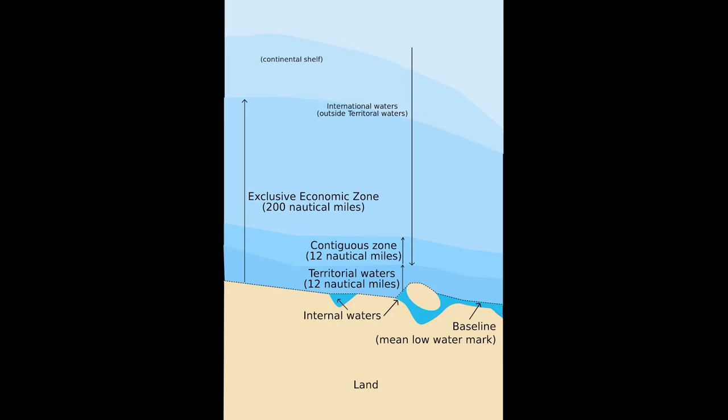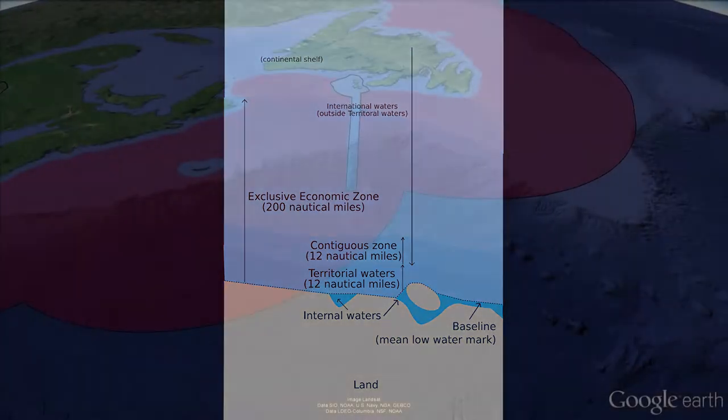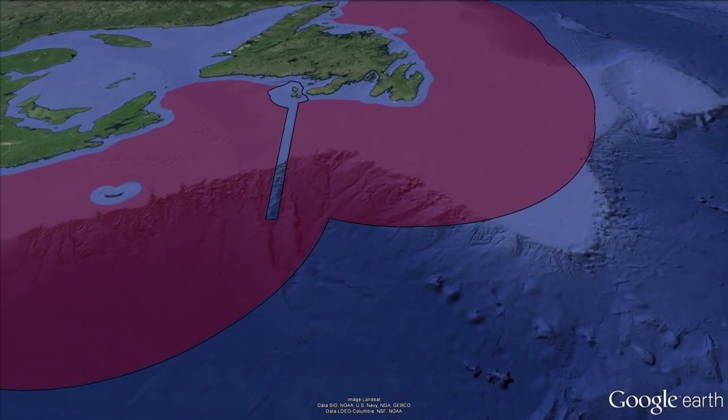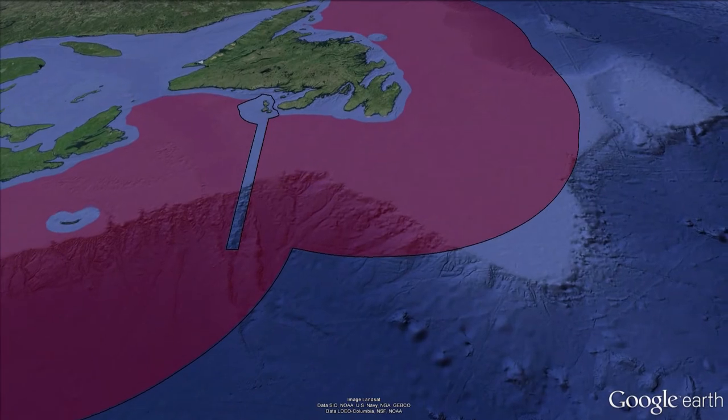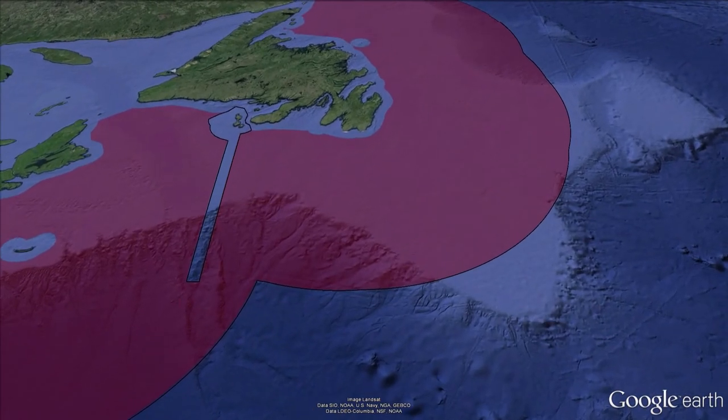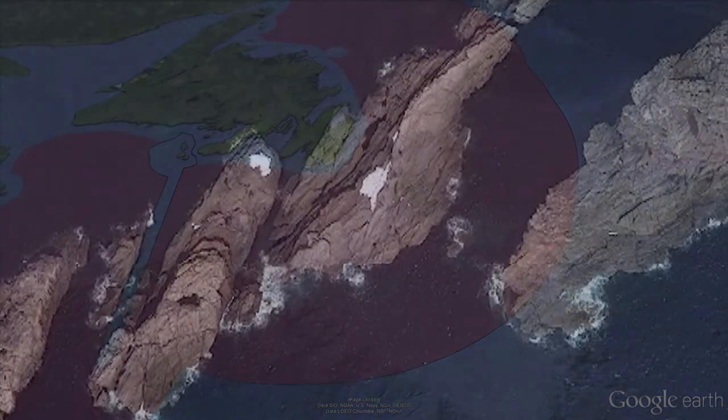This is the territorial sea baseline. There is also the 12 nautical mile limit, the 24 nautical mile limit, and the 200 nautical mile limit, which forms Canadian Fisheries Waters — the exclusive economic zone of Canada — a zone that is nearly 3 million square kilometers in size.